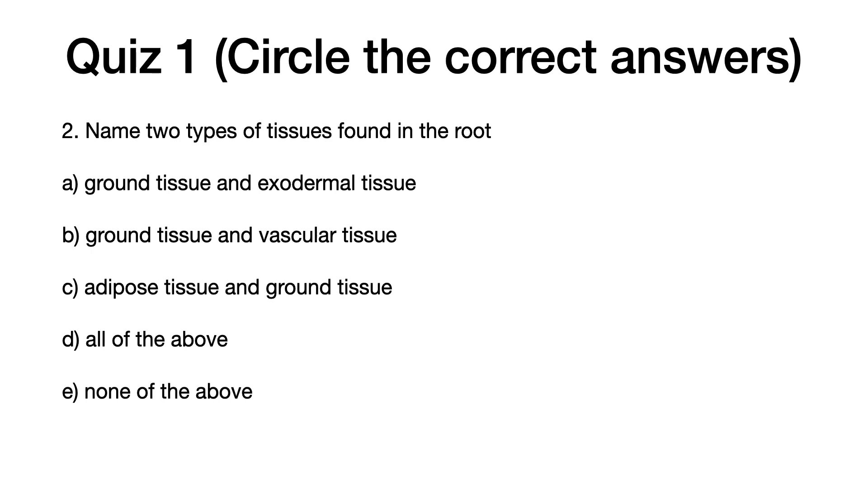Question two: Name two types of tissues found in the root. a) ground tissue and exodermal tissue, b) ground tissue and vascular tissue, c) adipose tissue and ground tissue, d) all of the above, e) none of the above.